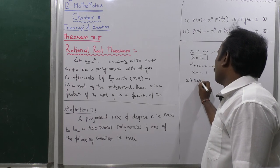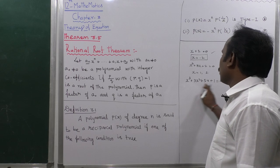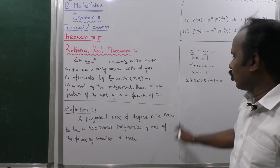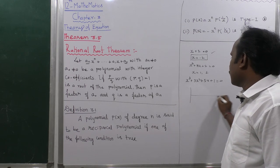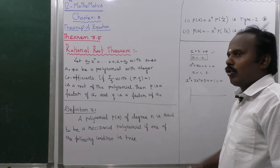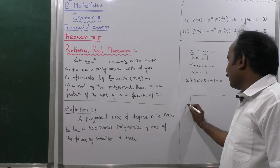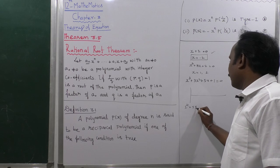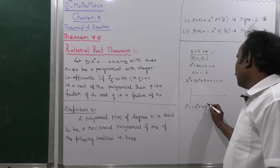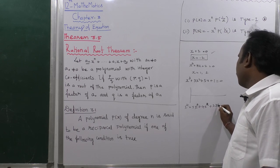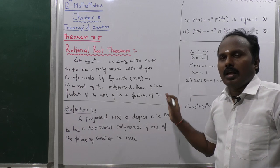Suppose x³ + 3x² + 5x + 1 = 0. This is a cubic equation, and it follows synthetic division or long division to get the factors. Similarly, x⁴ + 5x³ + ... + 2x + 3 = 0 is also solved by the long division method.